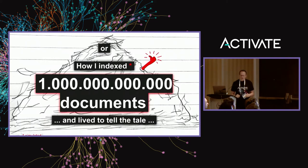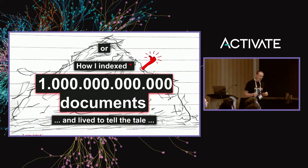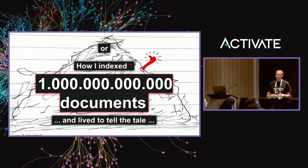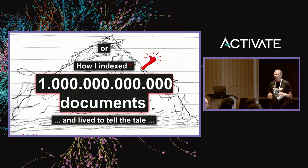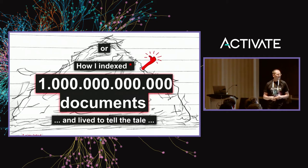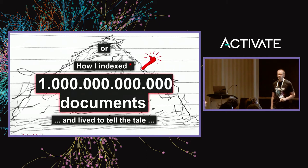I will also explain and show you how I indexed one trillion documents and how I survived this experience. That's not a mistake — that's one with 12 zeros.